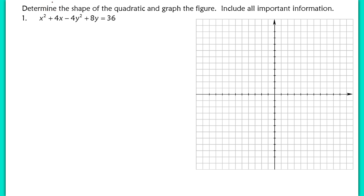In our first example, we're asked to determine the shape of the quadratic given in this particular equation, then graph the figure. To figure out the type of conic section, we'll complete the square to write this equation in standard form. First, make sure any constant term is separated from the variables — here 36 is already on the other side. Now start factoring out the lead coefficient of the quadratic terms.